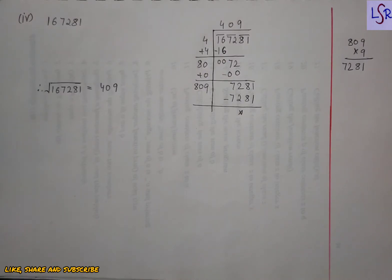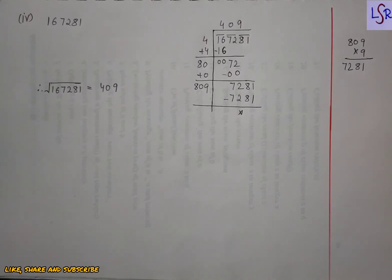In question 2, we have to find the number of digits of the square root of given numbers without actual calculation. For that, we simply make pairs — the number of pairs decides the number of digits of the square root.